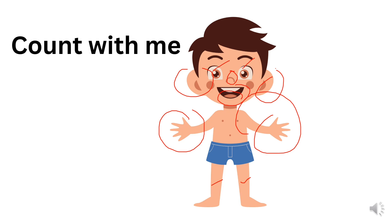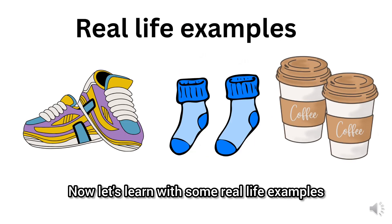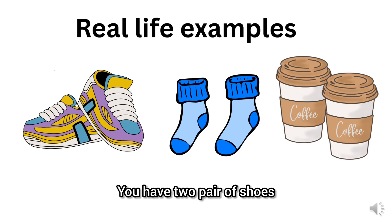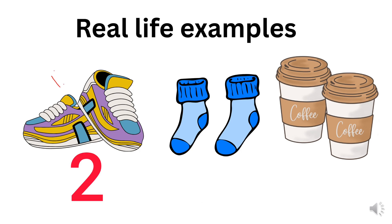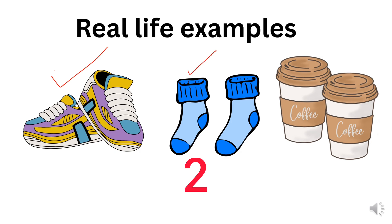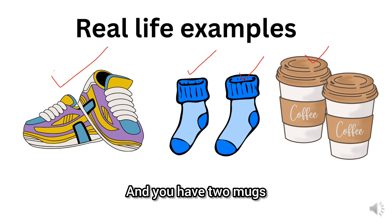How many mouths do you have? You have one mouth. Very good. Now let's learn with some real-life examples. You have two pairs of shoes. You have two socks. And you have two mugs.